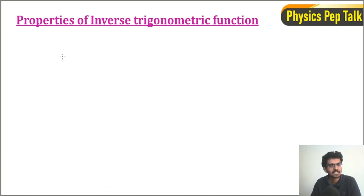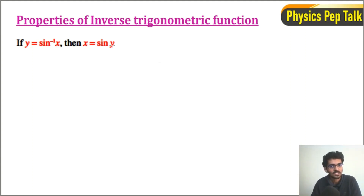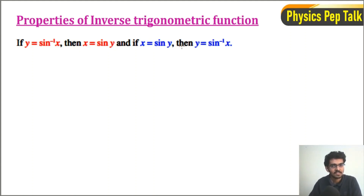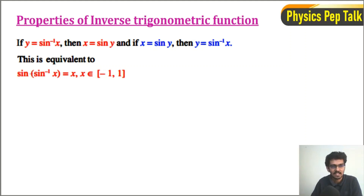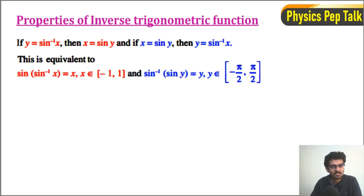The first basic thing: if y is equal to sin inverse of x, then x is equal to sin of y. This is equivalent to writing sin of sin inverse of x is equal to x, for x belonging to the closed interval minus 1 to 1, which is the domain. And sin inverse of sin of y is equal to y, where y belongs to the closed interval minus pi by 2 to pi by 2.